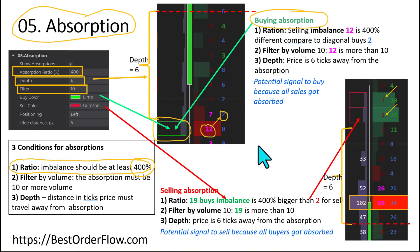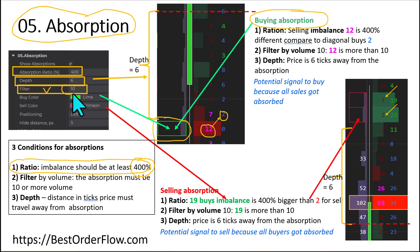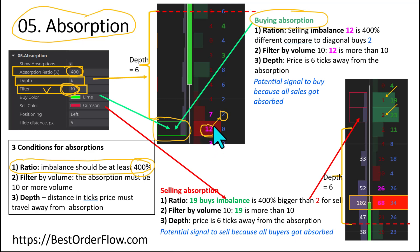That's the first condition. The second condition is we should filter by volume. This is the ratio of 400%, and this is the second filter by volume — the volume should be no less than 10. And obviously 12 is more than the filter of 10, that's why it shows.